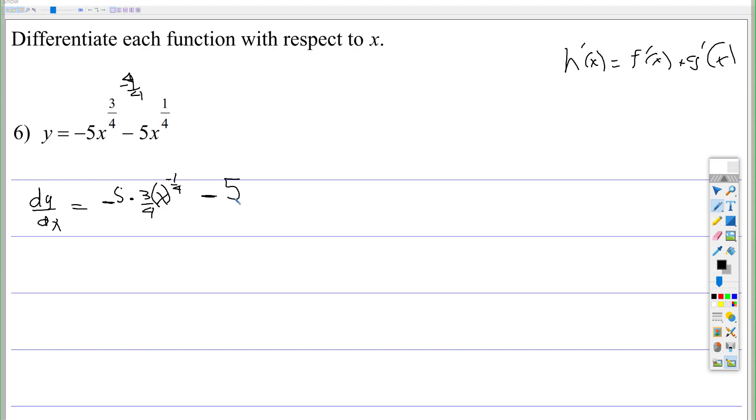Then we're going to subtract, the 5 is still there, then we're going to bring that 1 fourth down, so 1 fourth x, so 1 fourth subtract 4 over 4, subtract 1, is negative 3 fourths. That's just the x piece.